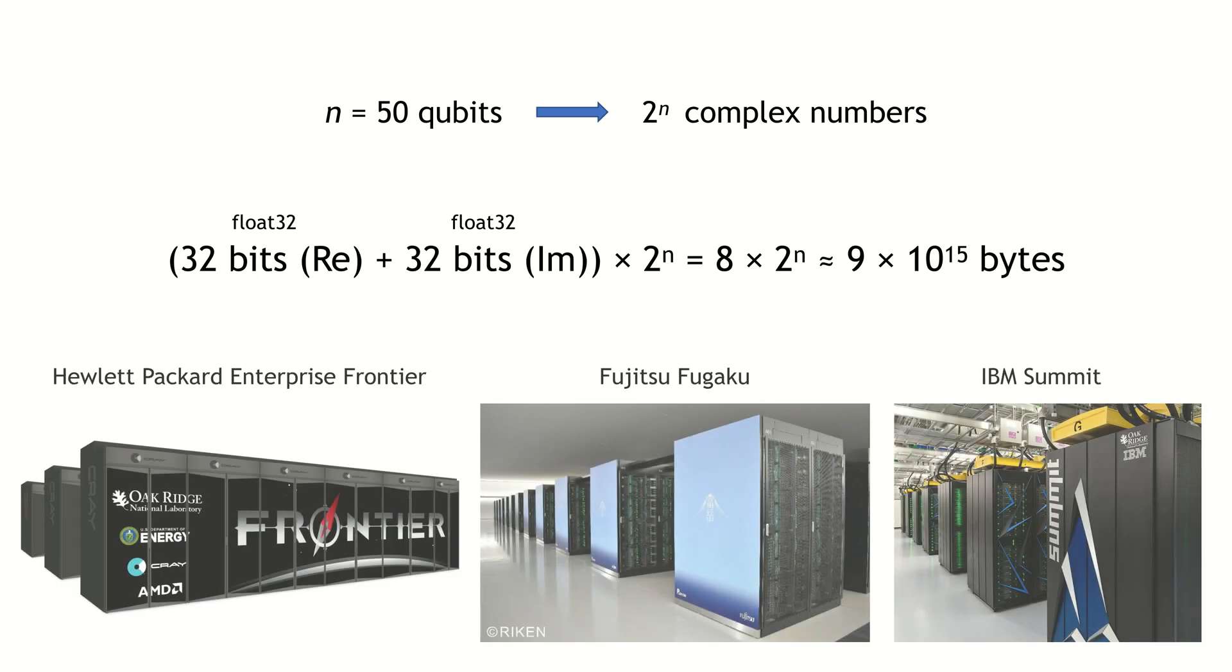Indeed, a quantum computer with fully operational 50 qubits can store a state vector which consists of 2 to the power of 50 complex numbers. Using a single precision floating format or float32 to store the real and imaginary parts of each vector component, this would correspond to something like 9 petabytes of information, which roughly corresponds to the random access memory of modern supercomputers.